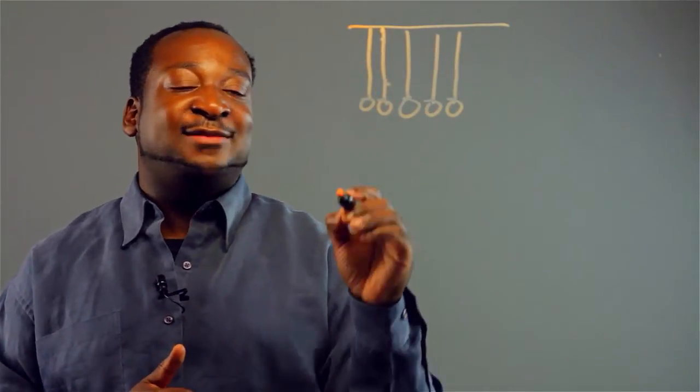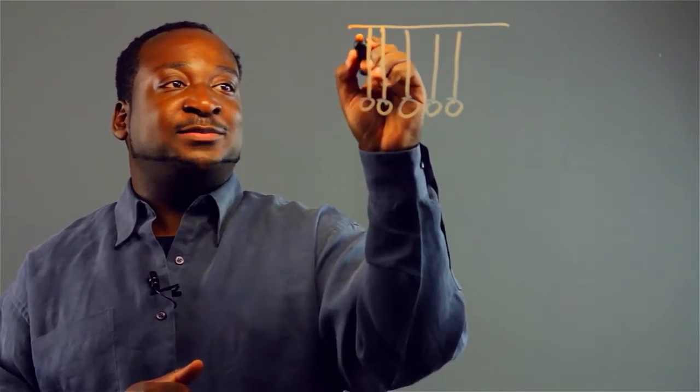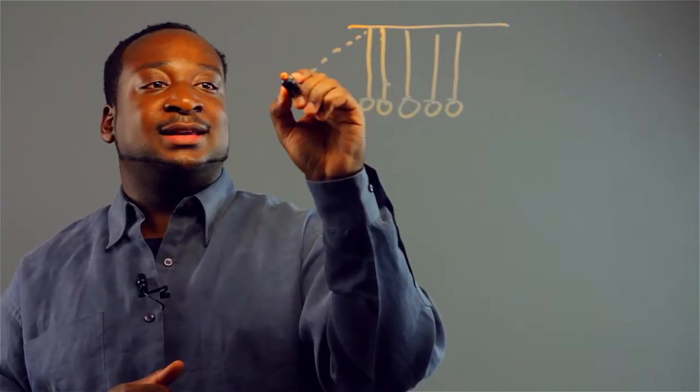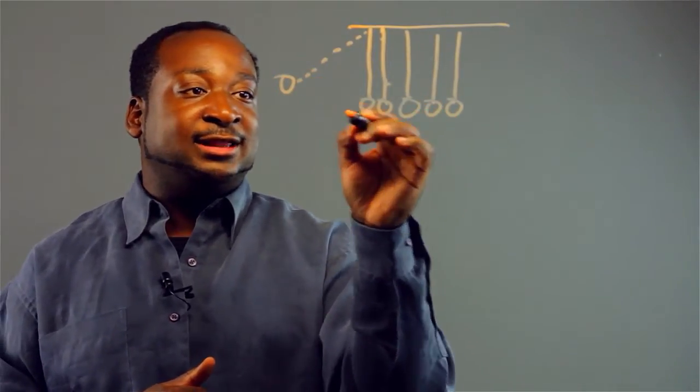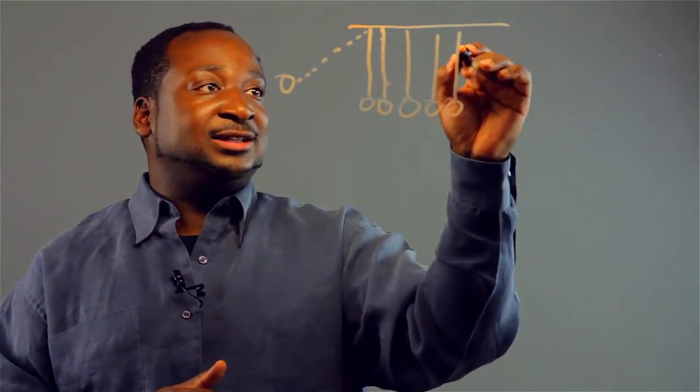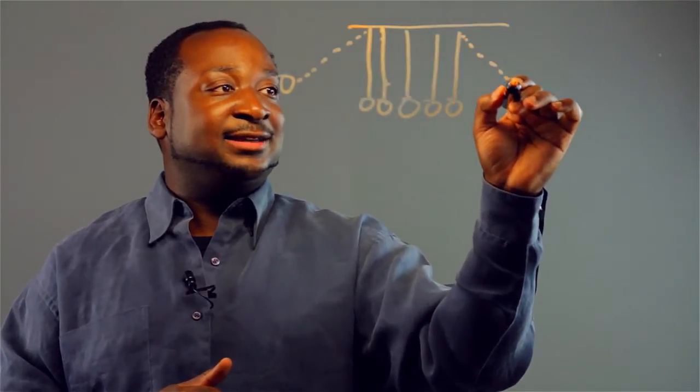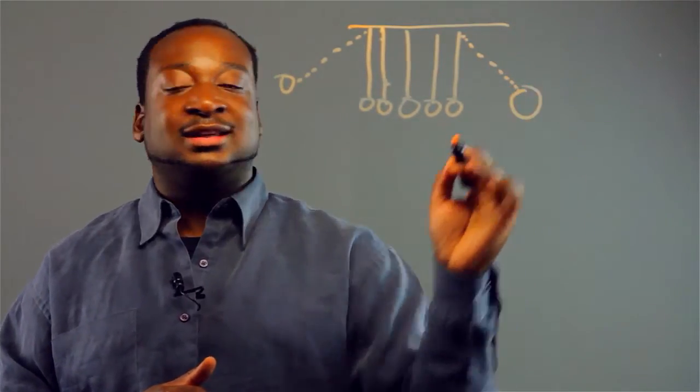Now basically what happens is, we'll lift up a ball and then release it. It'll hit the other balls and then you have the ball at the end being swung.